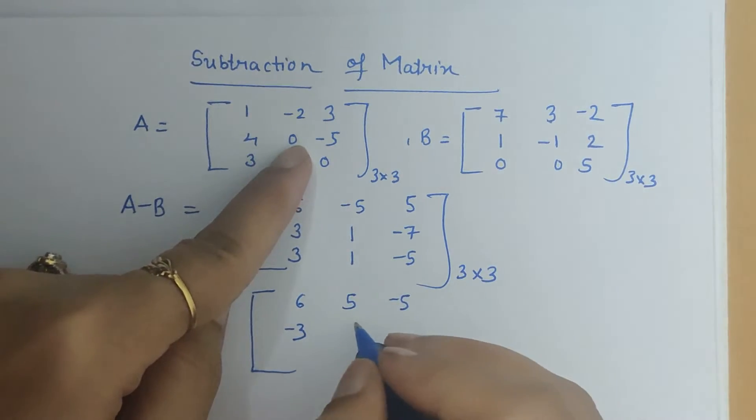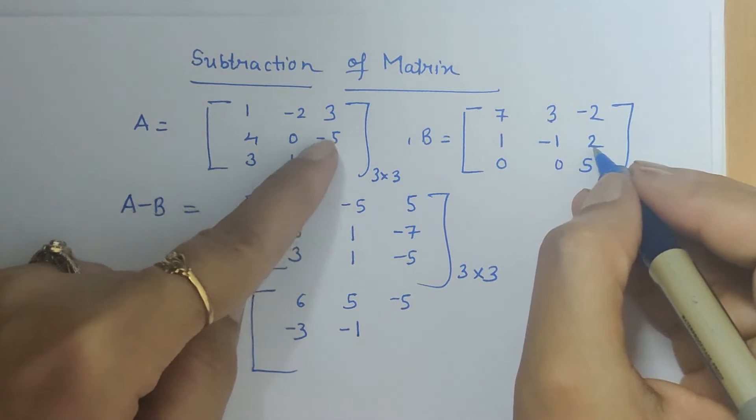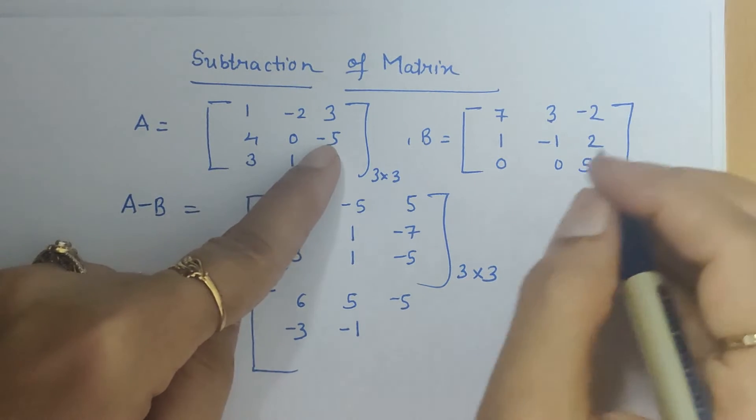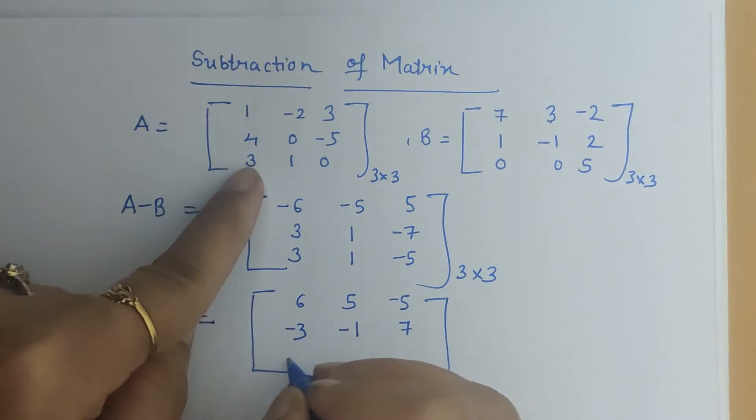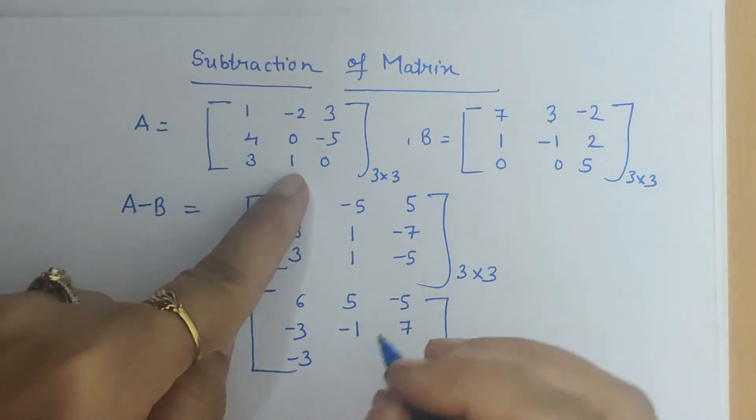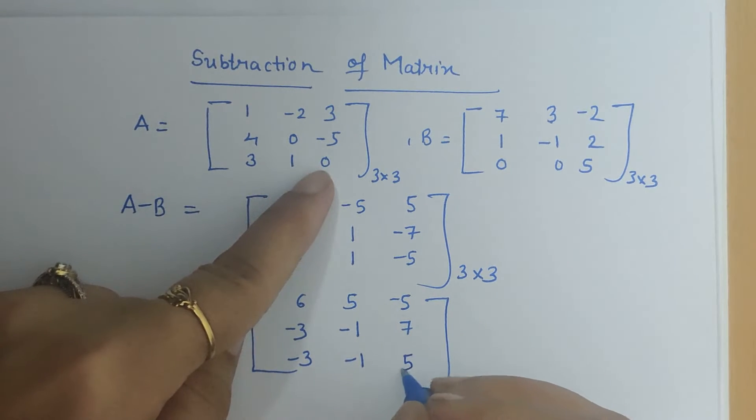minus 1 minus 0 is minus 1, 2 minus of minus 5 that is 2 plus 5 is 7, then 0 minus 3 is minus 3, 0 minus 1 is minus 1 and 5 minus 0 is 5.